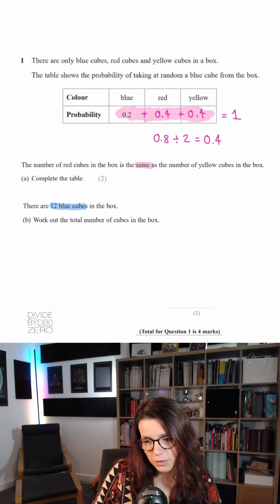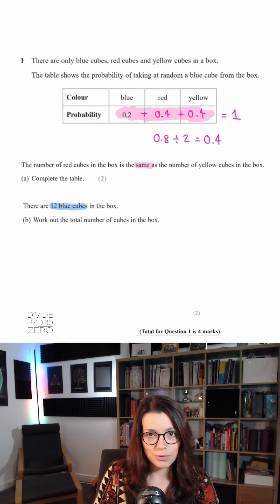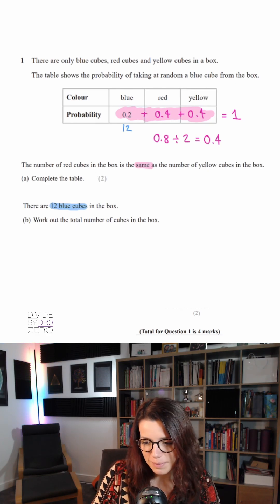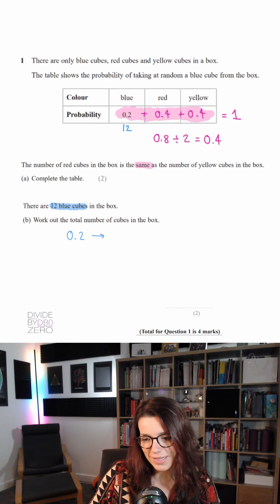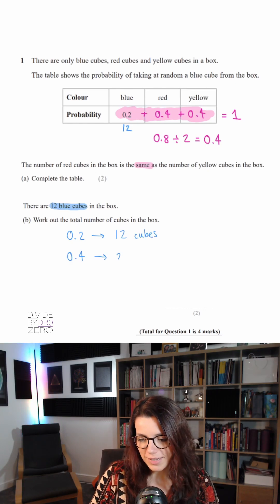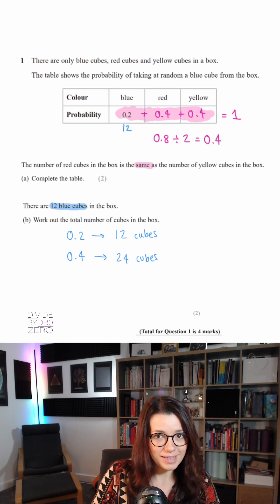Part B, there are 12 blue cubes in the box. Work out the total number of cubes. So if there are 12 blue cubes, that means that a probability of 0.2 represents 12 cubes. From there we can work out that 0.4 would represent 24 cubes by just doubling the amounts.